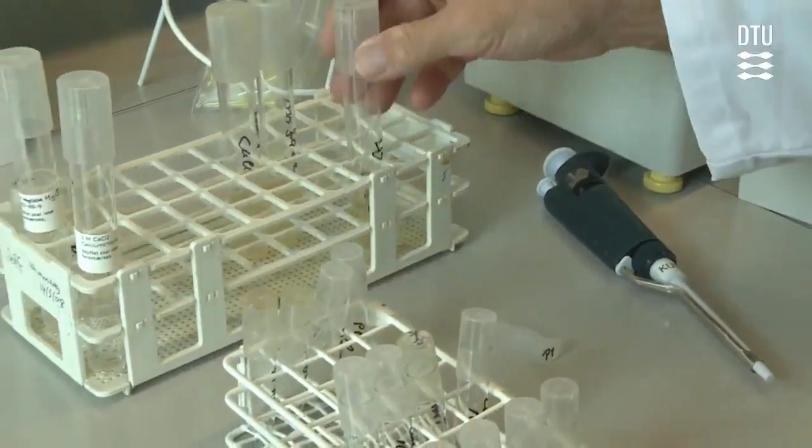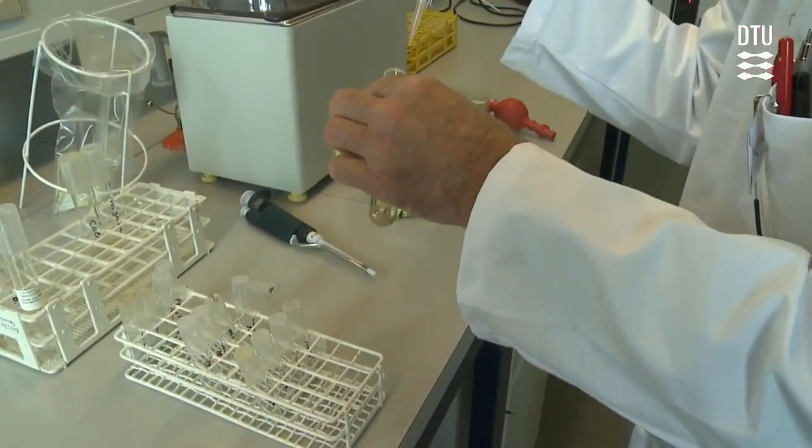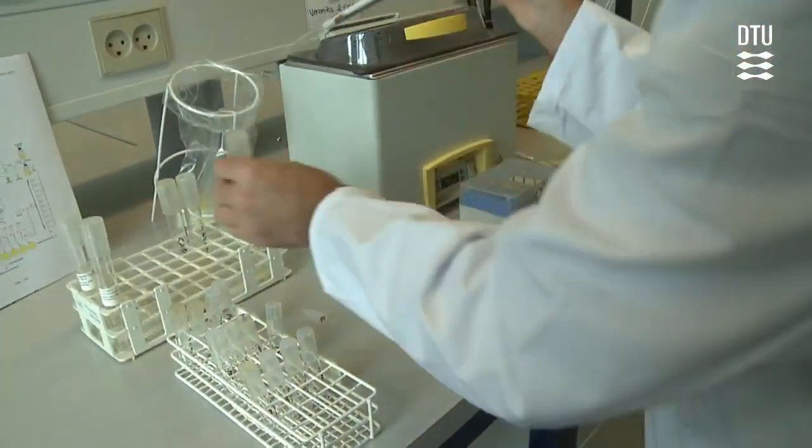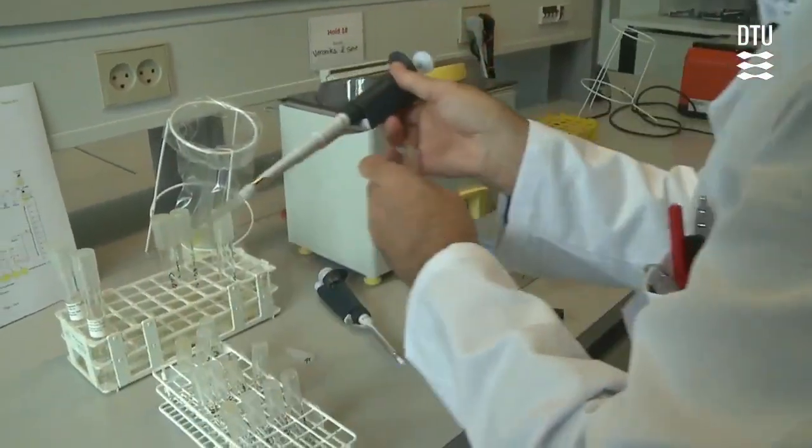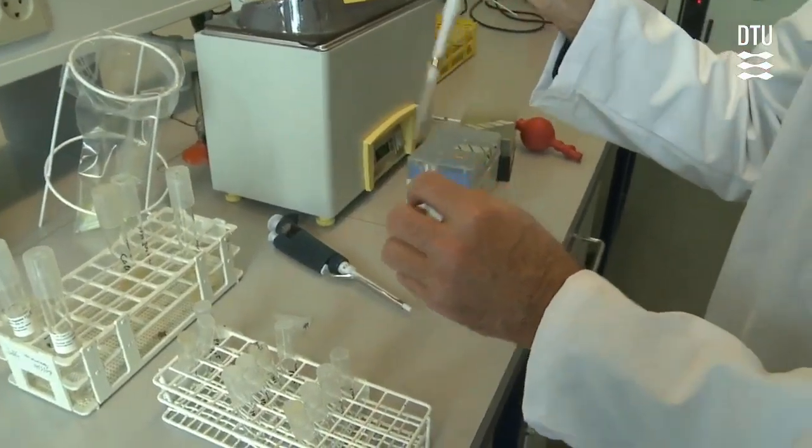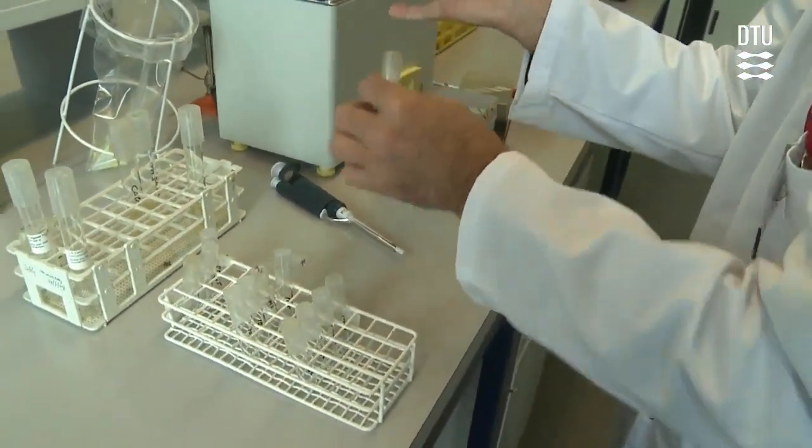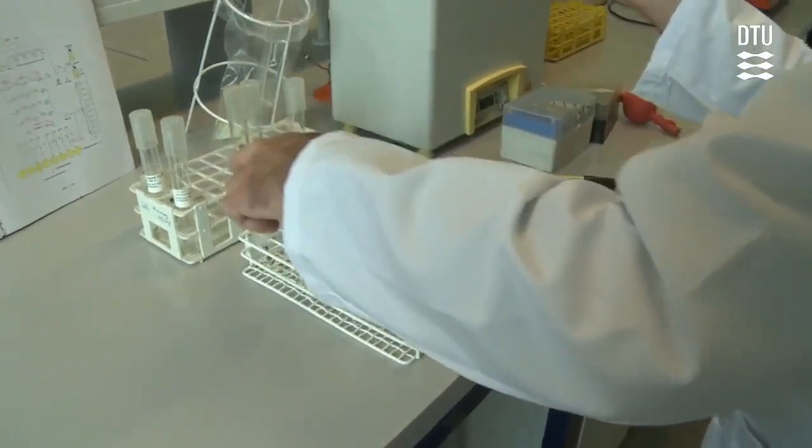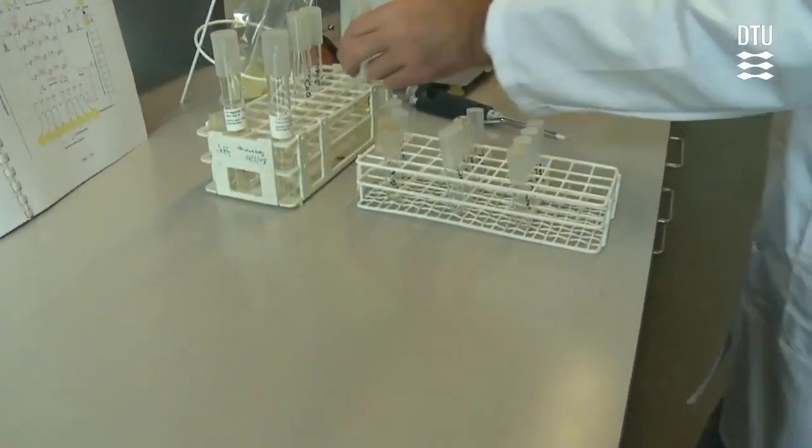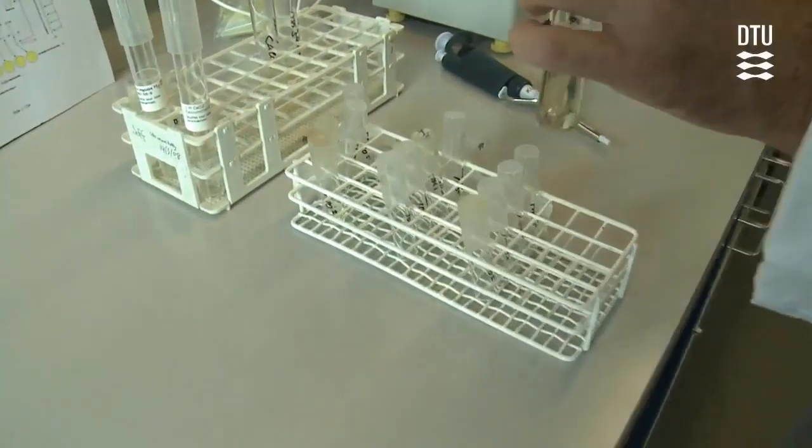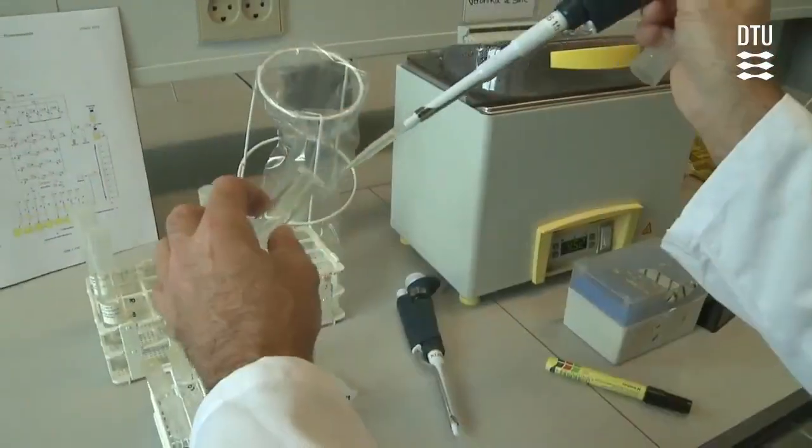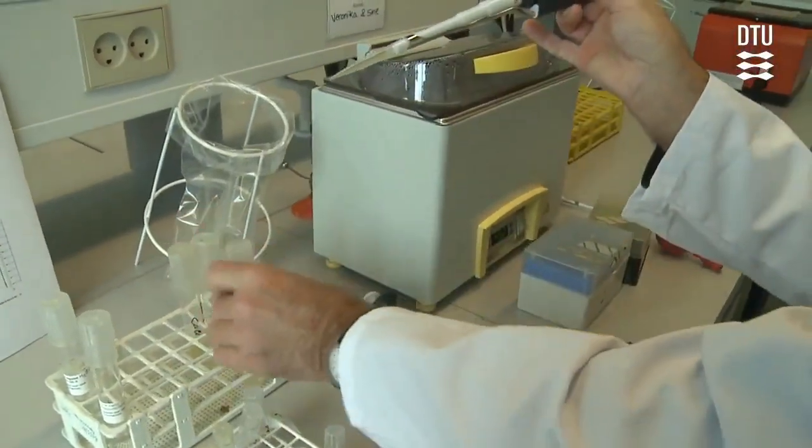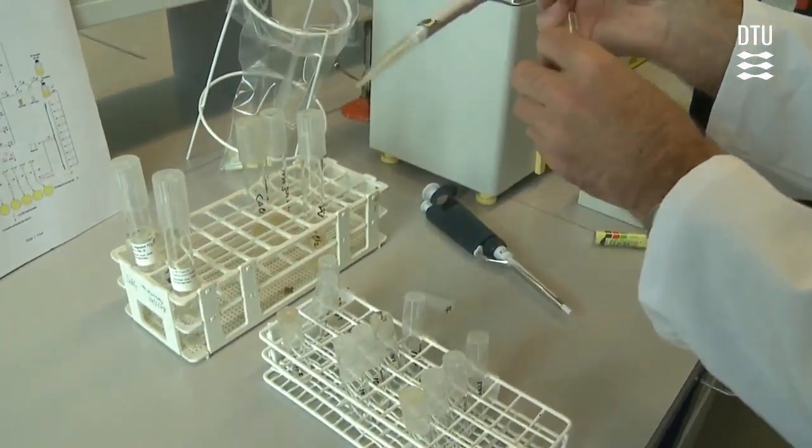So we start out adding one milliliter of LB plus calcium to the four tubes for the phages. So first one here, one milliliter without too much contamination. And in 2019 and onwards we are using plastic tubes instead of these glass tubes with the lids on.